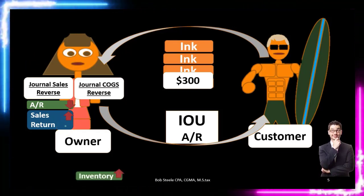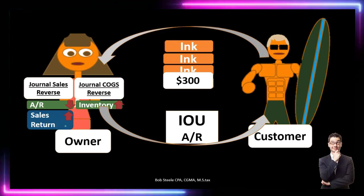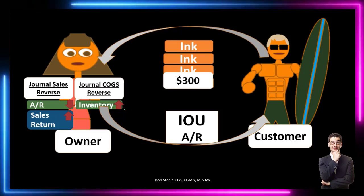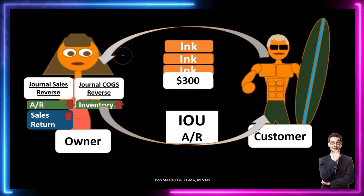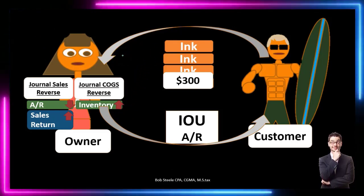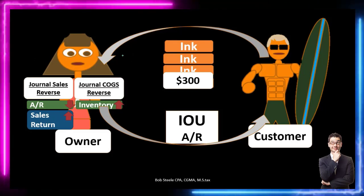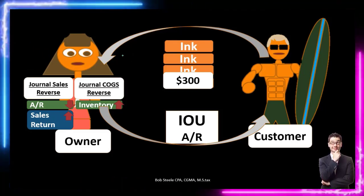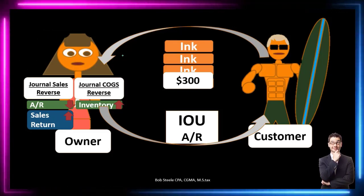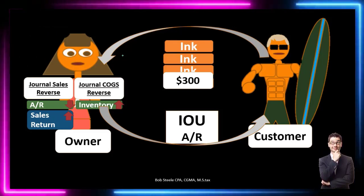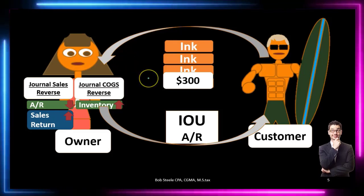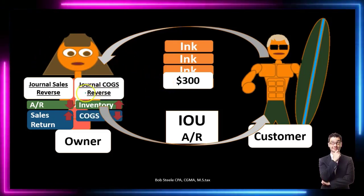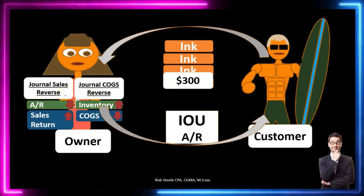The other side involves cost of goods sold and inventory — inventory is probably easier to think about first. Inventory goes up because we got it back. If the inventory was damaged we might write it off, but if it's a straightforward return, inventory is being received and therefore goes up. Note it's not going to go up by the $300, because that's the sales price — the cost to us is something lower than that, since we sold it at a profit.